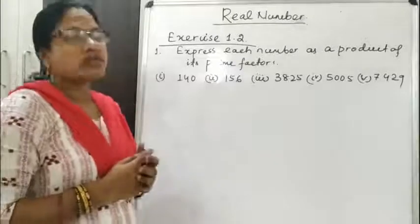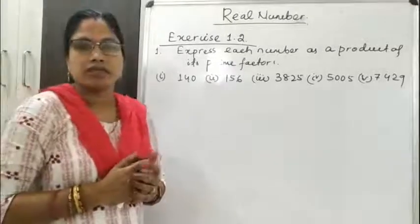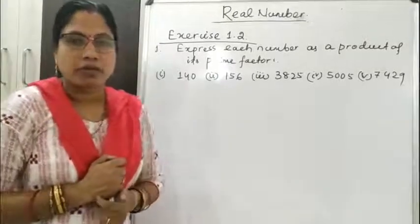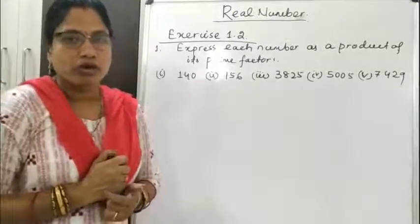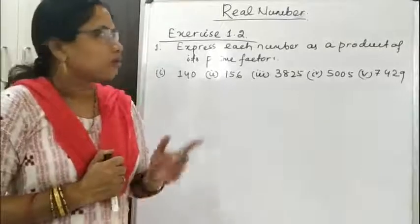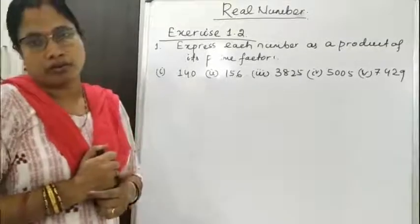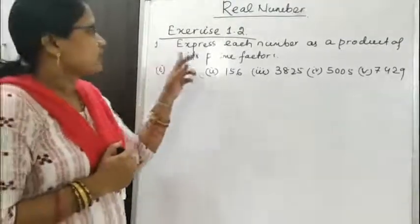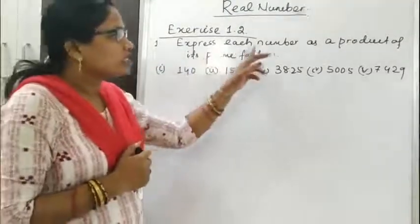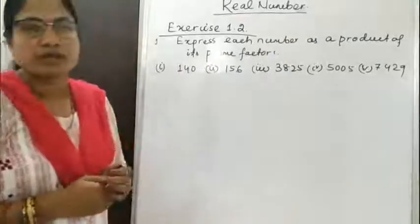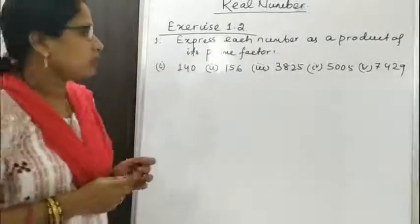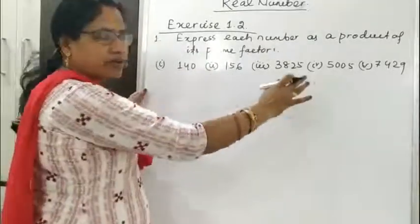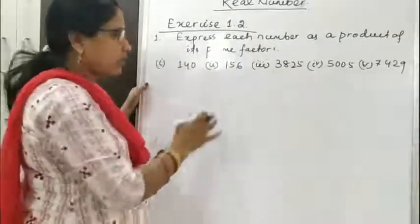So let us solve in this section the exercise 1.2 of the chapter Real Numbers. The first question is to express each number as a product of its prime factors. Five numbers are given.